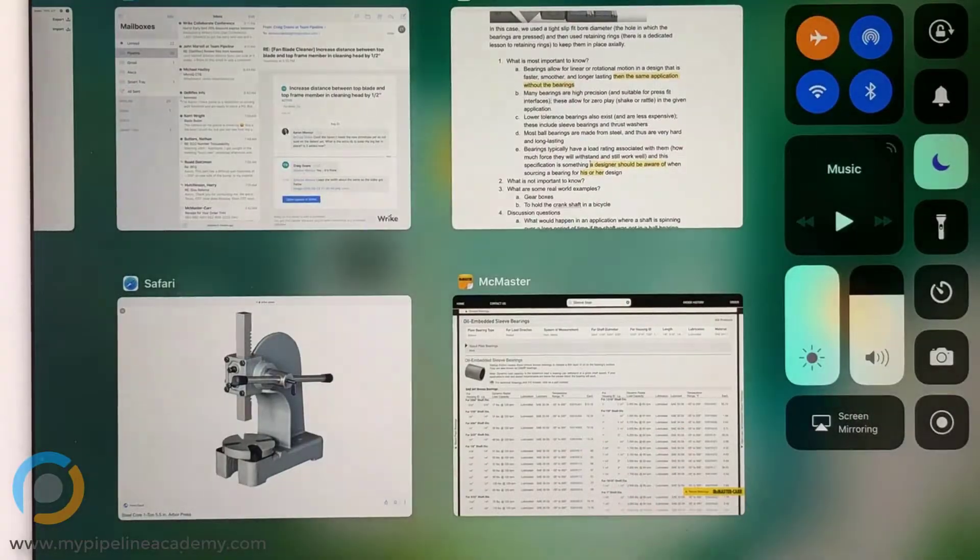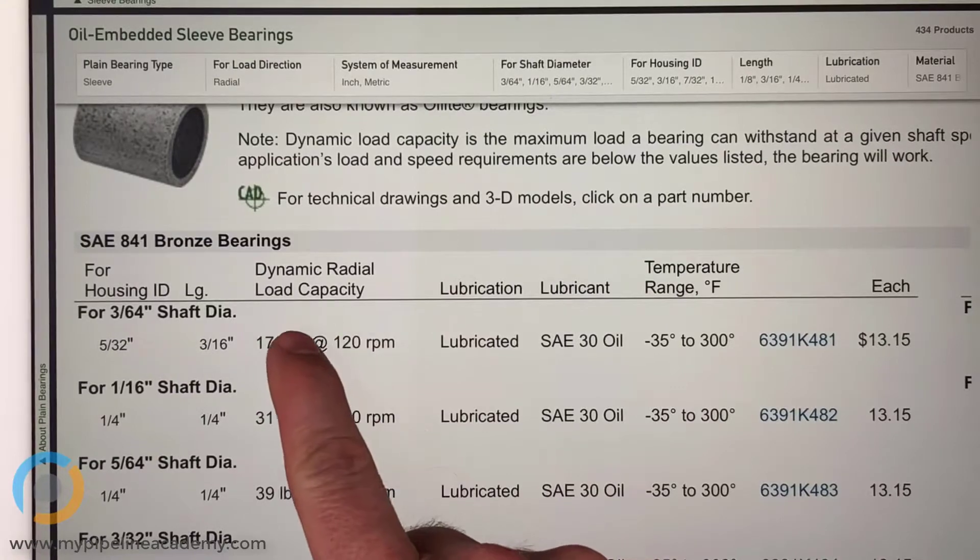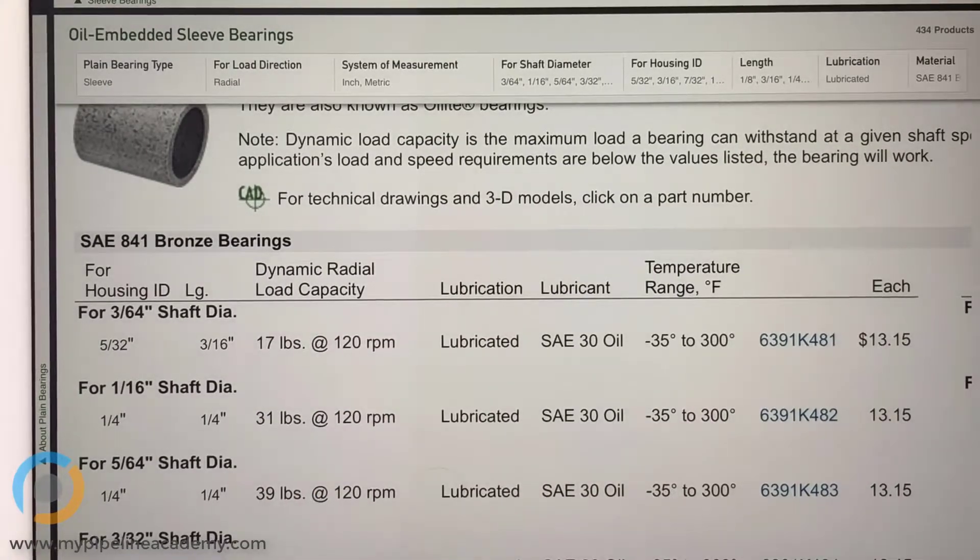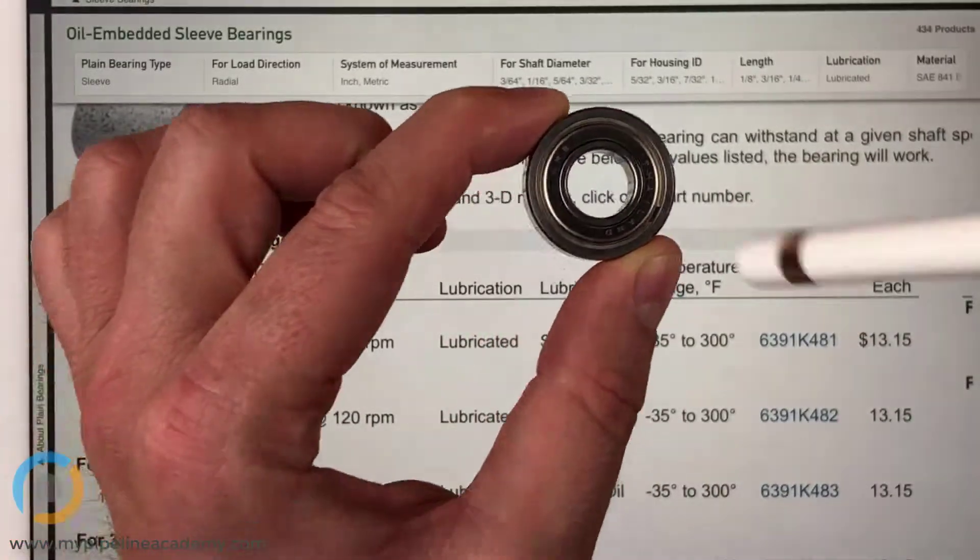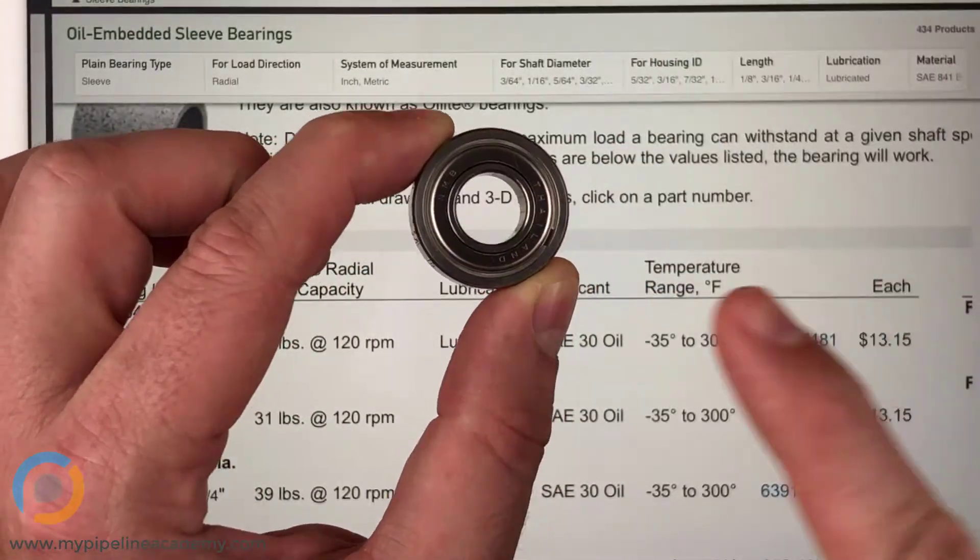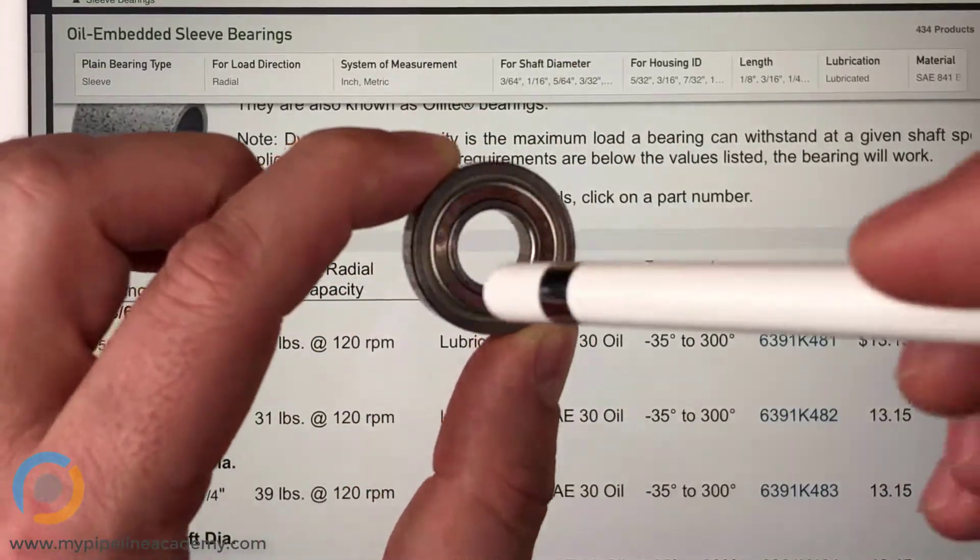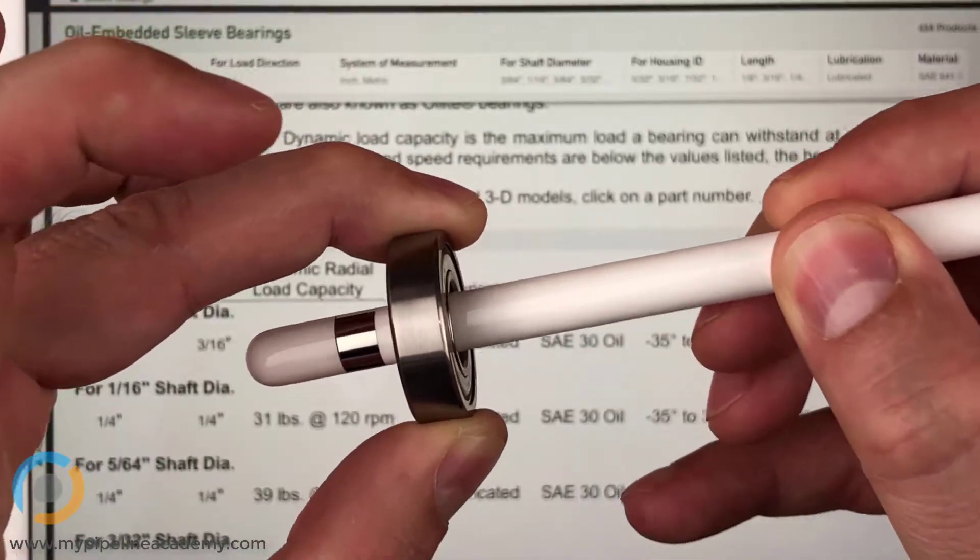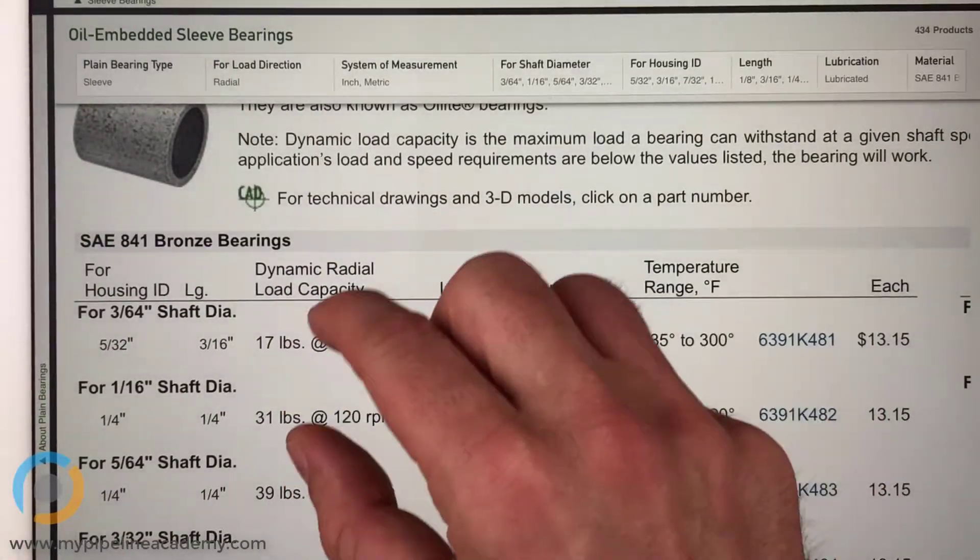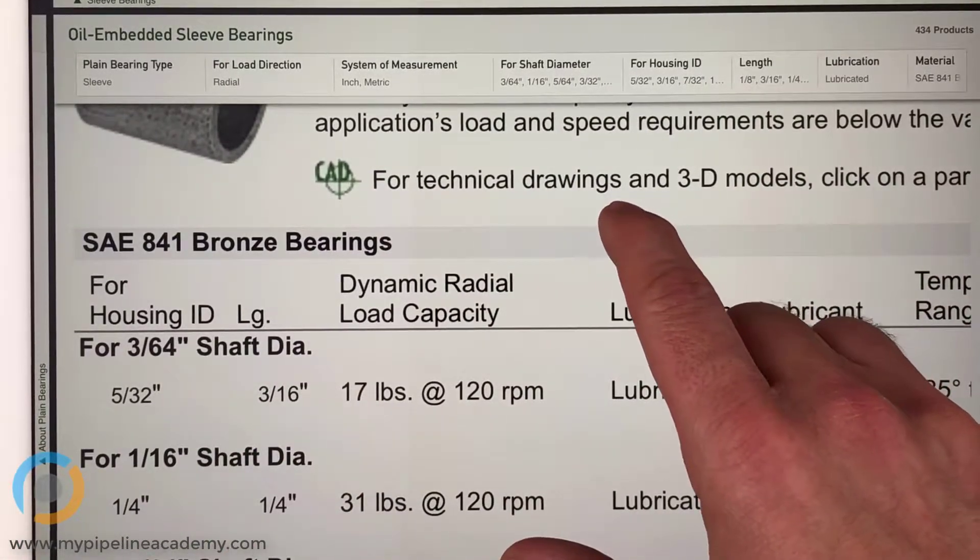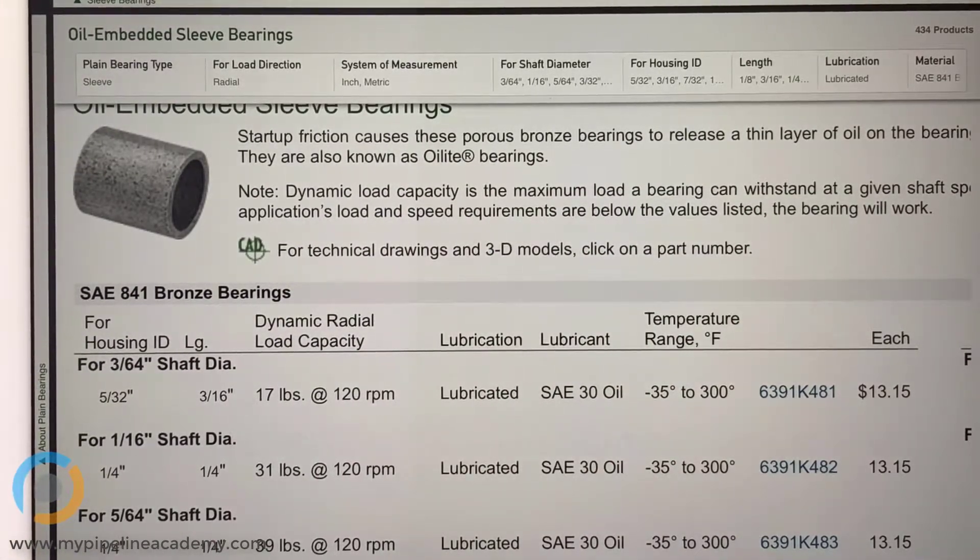Great. We'll go to McMaster. These are sleeve bearings, but that's okay. See this column here, Dynamic Radial Load Capacity. Radial load is, if I have a bearing and I have a shaft that goes through it, radial is going to be pointing out away from the bearing. So radial would be if I were to pull this pin down against the inner race of the bearing, that would be radial. And that's what this is saying right here, this dynamic radial load capacity. Most bearing suppliers will have that specification in their documentation.